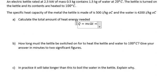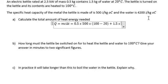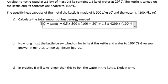So we will apply this formula in this situation. We have 0.5 multiply with 500 multiply with the temperature difference between 100 degrees Celsius and 20 degrees Celsius, plus 1.5 for the water times 4200 times 100 minus 20.